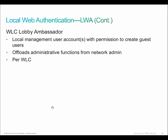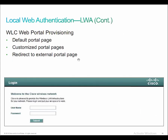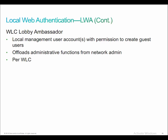One situation with deploying local web authentication is that once you're authenticated and connected to the wireless controller, the traffic path goes through the corporate LAN even though we're provisioning it to go to the internet. We are isolating that traffic flow by assigning it to a specific VLAN with security policies in place, but there is an additional way to provision this access.